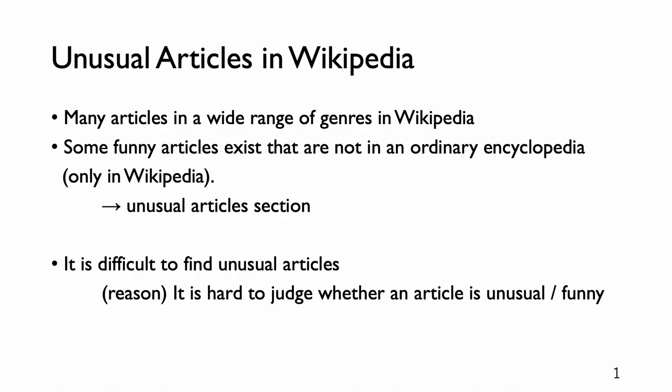Wikipedia contains many articles on a wide range of things, and some sections of Wikipedia contain articles on things not covering ordinary encyclopedias. One such section is the unusual articles section. It is difficult to find unusual articles because it is hard to judge whether an article is unusual or funny.